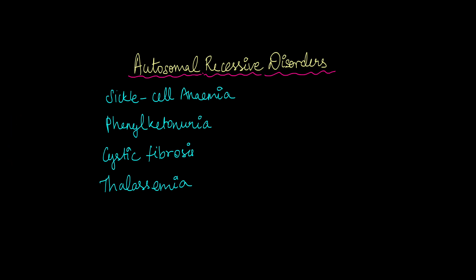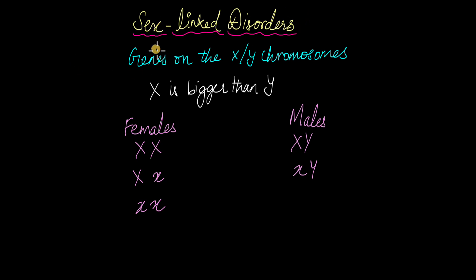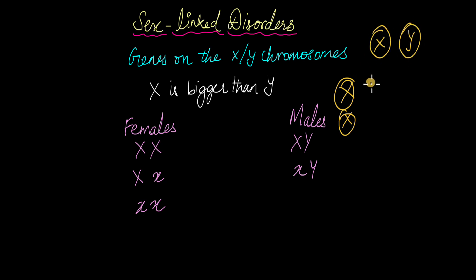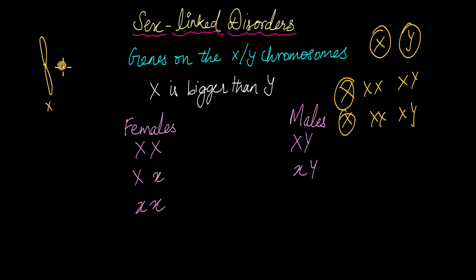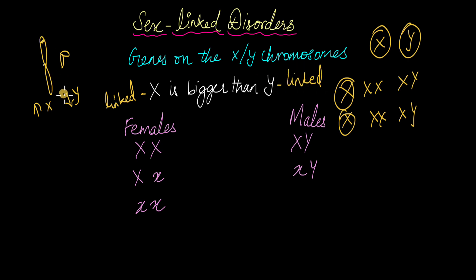Now let's talk about sex-linked disorders. As mentioned, sex-linked disorders involve mutations on genes present on either the X or the Y chromosomes. Females have XX chromosomes while males have XY chromosomes. Females produce gametes with only X chromosomes, while males produce gametes that are 50% X and 50% Y, giving an equal 50% chance of the offspring being a girl or a boy. The X chromosome is much bigger than the Y chromosome and has more genes, which is why there are more X-linked disorders compared to Y-linked disorders.